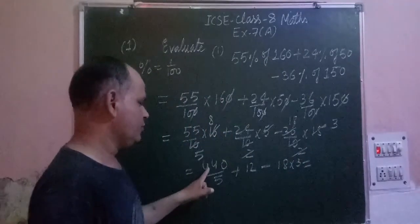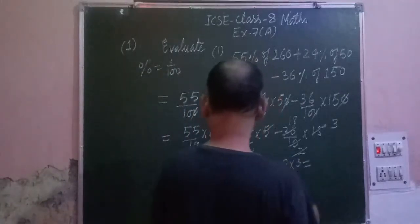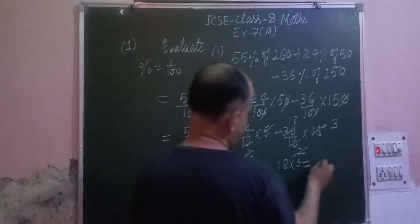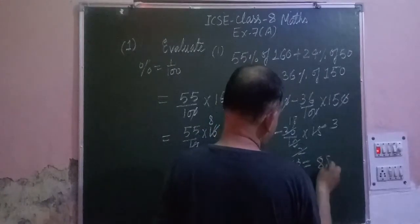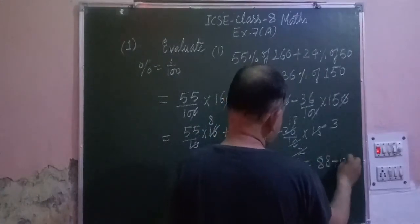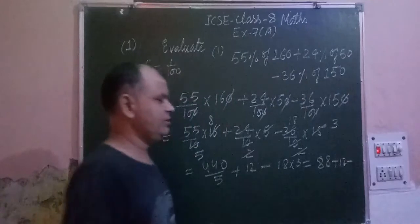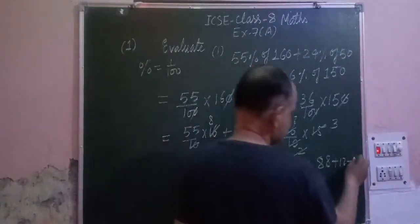Minus 18 into 3. So we got 40 plus 12 minus 54, which gives us 54.